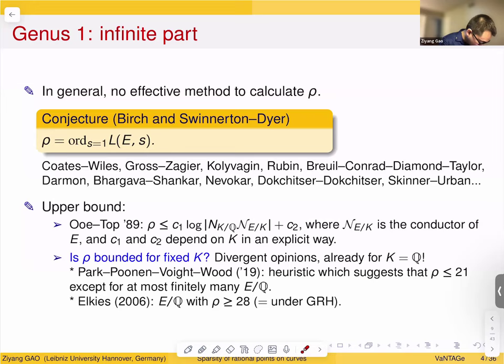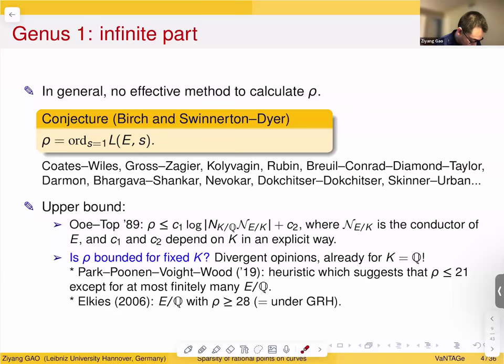There are divergent opinions on the question of bounding rank. In 2006, Elkies constructed an elliptic curve with rank at least 28 under GRH. In 2019, Park, Poonen, Voight, and Wood proved a heuristic suggesting that ρ is at most 21 for 100% of elliptic curves — except for at most finitely many. So this question still has divergent opinions.